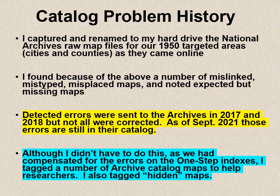Although I didn't have to do this — since we had compensated for the errors on the One-Step indexes — Steve spent a lot of time so that when you put in St. Louis, he would ask for the incorrect material from the National Archive Catalog in a way that still worked. If they fix these errors now, Steve is going to have to reprogram all the things we did four years ago. Anyway, I tagged a number of archive catalog maps to help researchers, and I also tagged hidden maps.